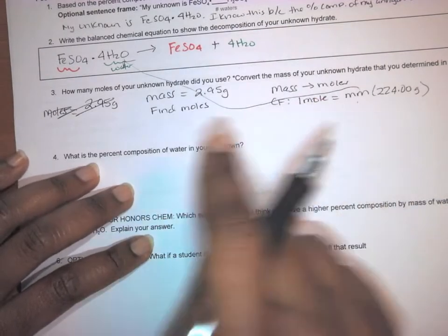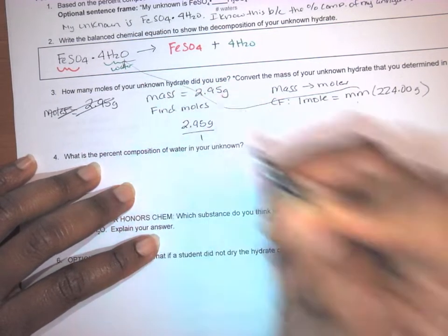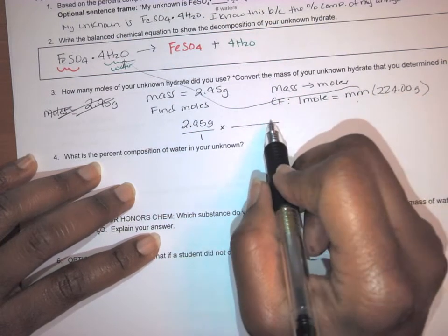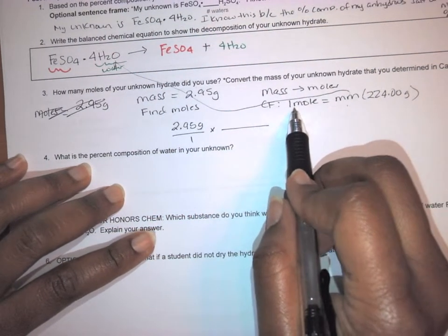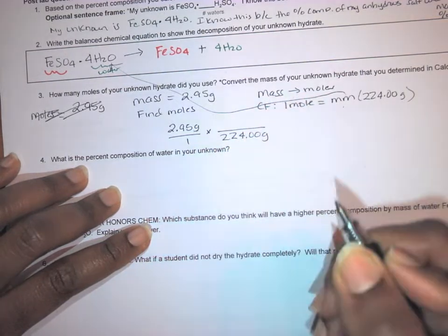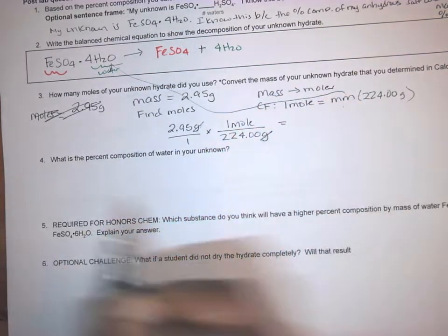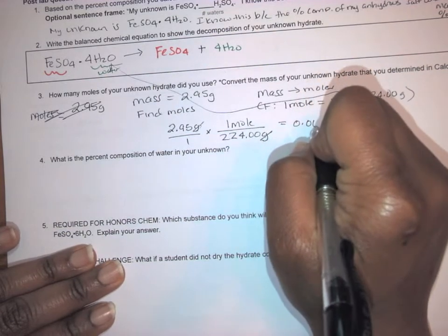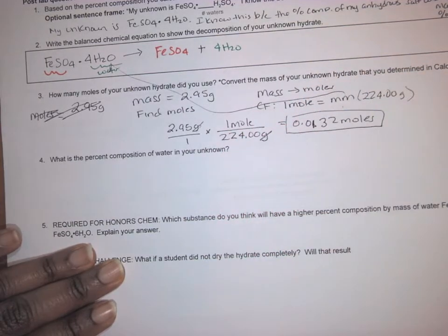So now that I know what I'm doing here, I'm going to now use my dimensional analysis. I take my given 2.95 grams, put it over one just to make it into a fraction. Then I'm going to take this conversion factor and I'm going to arrange it so that the units I don't want my given units, they're going to cancel out. Now in order for them to cancel out, they have to be opposite. So this conversion factor has one mole and 224 grams. I'm going to put the 224 grams on the bottom so that these units can cancel out. And then on top, I put the one mole. And then I would do my math 2.95 divided by 224.00. And that gives me 0.0132 moles.